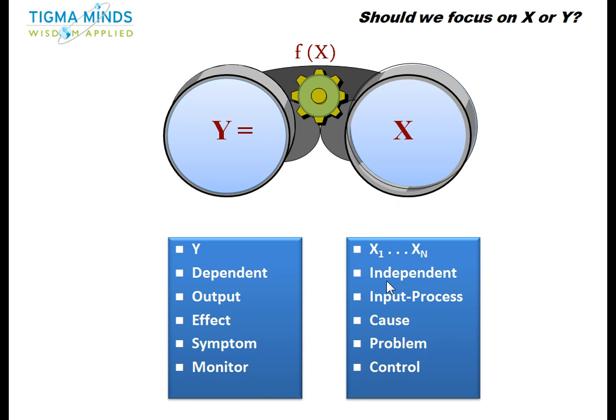So if you look at a process as a machine that converts, takes a finite number of X's and processes them and gives you an output, this is how it will look like. So should we focus on x or y? What I mean is should we focus on the inputs or should we focus on the outputs? That's something we will discuss in a short while from now.